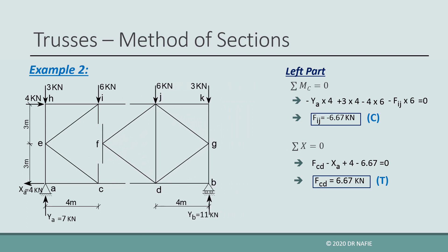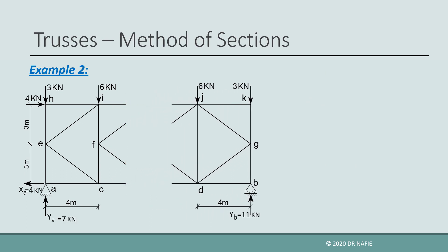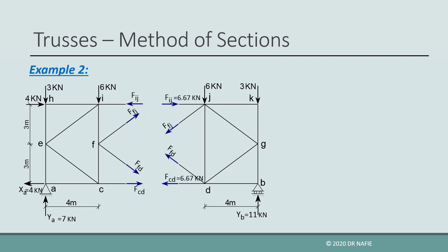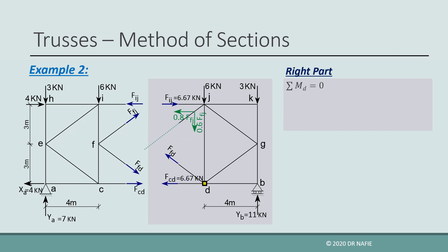After the forces in IJ and CD have been evaluated, we return to the original cut. Now this cut has only two unknown internal forces in FD and FJ, and the three equilibrium equations will be more than enough to evaluate them. We consider the right part and take the moment about point D. To evaluate the moment caused by the inclined force in FJ, we use the X and Y components of the inclined force instead of finding the perpendicular arm directly. Be aware that force components can be moved to any point on the path of the original force without changing the moment equation, and we use this to place the components in a location that simplifies the solution.